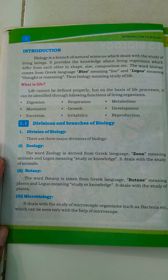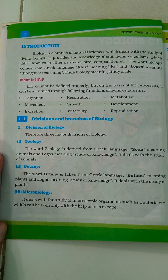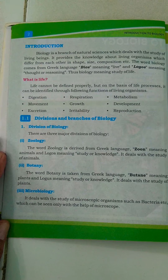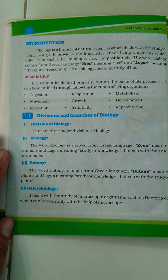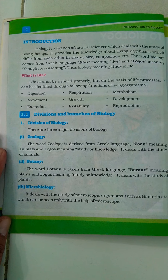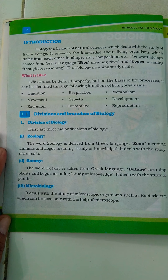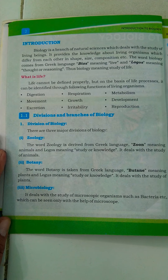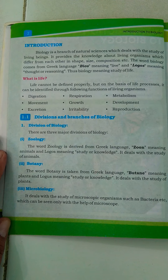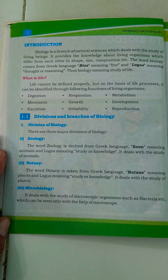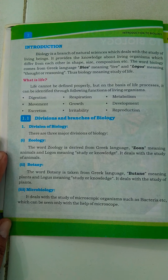Biology deals with the study of living beings — all the living organisms which have the ability to locomote, eat, and reproduce. The living beings include plants, animals, microscopic organisms, bacteria, and protozoans. All these living organisms can be studied under the branch of biology, which is the branch of natural science.